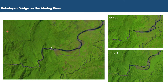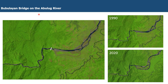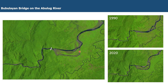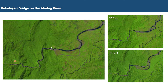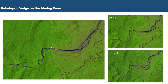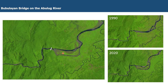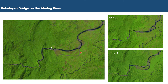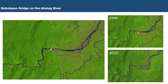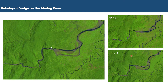Changes in channel planform don't just occur at the event scale. Here we take a 30-year record of Landsat satellite imagery for the Bubba Lion bridge on the Abalug River and can see real changes in channel planform downstream of the bridge over this 30-year period. Upstream, the river is confined within the valley; downstream of the bridge it expands onto an alluvial plain with more space to laterally adjust, shifting from a mainly single-threaded channel in 1990 to a multi-threaded channel with widening of the active channel by 2020.